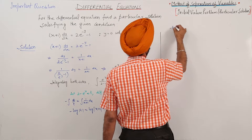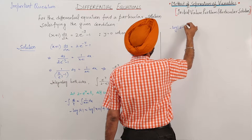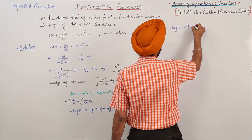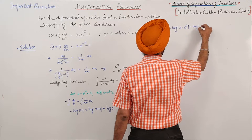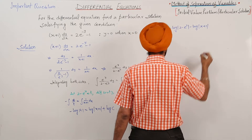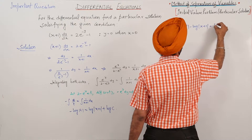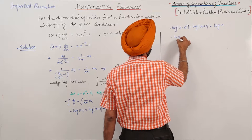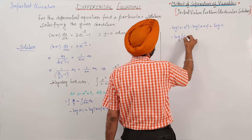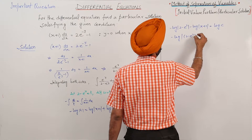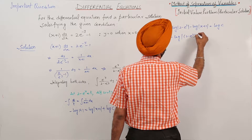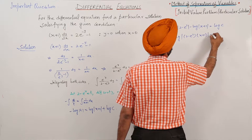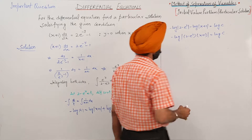Back-substituting t = 2 minus e^y: negative log|2 minus e^y| minus log|x + 1| is equal to log c. Combining the log terms on the left: negative log of (2 minus e^y)(x + 1) is equal to log c.